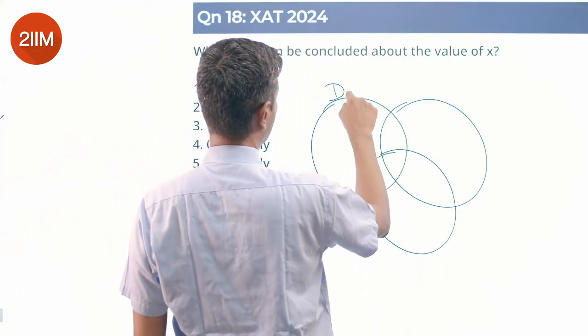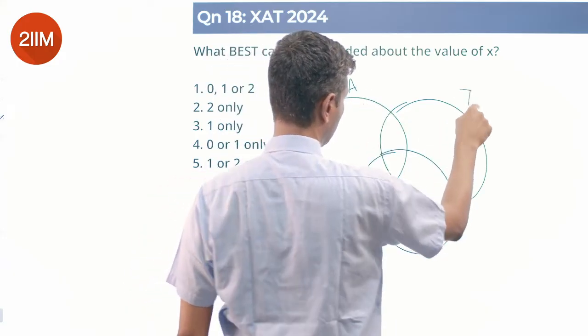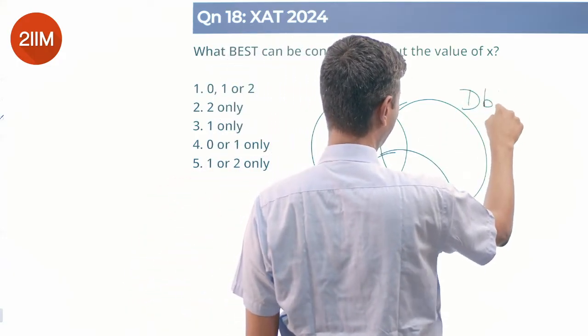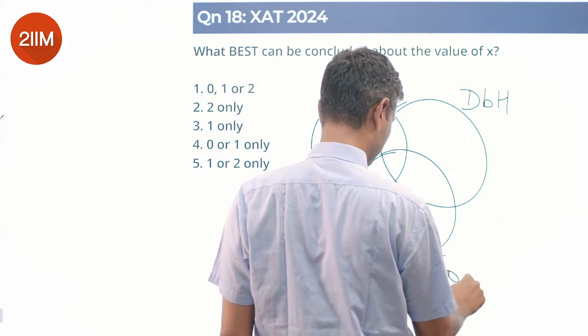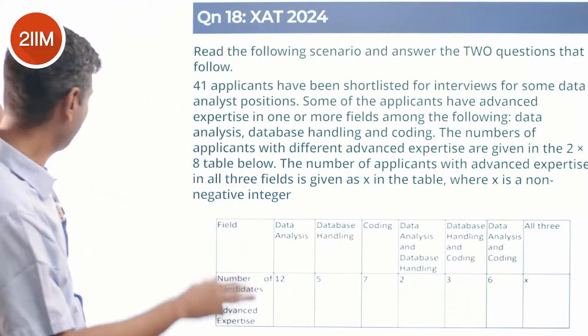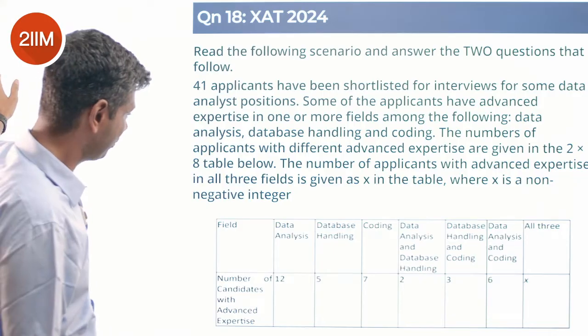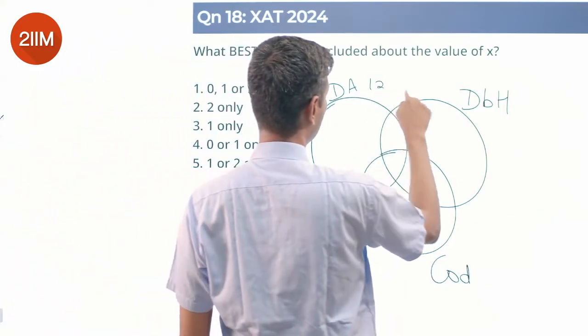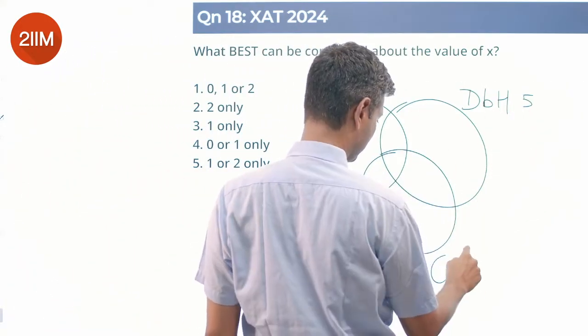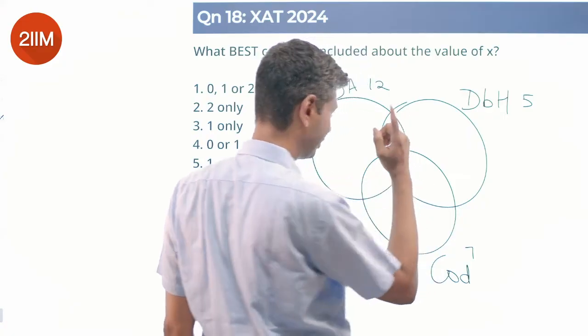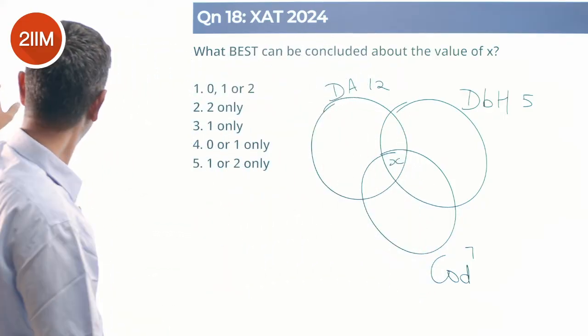Data analysis, database handling, and coding. So I think it's database handling, yeah database handling, and whatever that means: 12, 5, 7. This is 12, this is 5, this is 7, this is X.